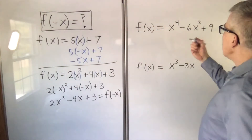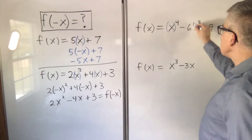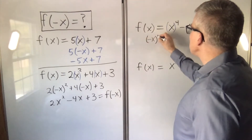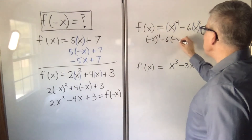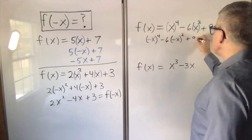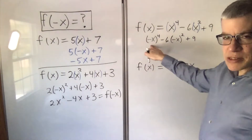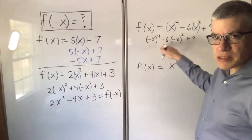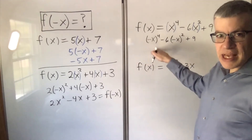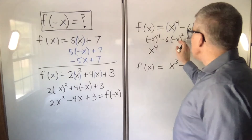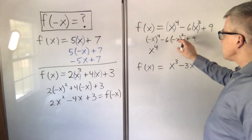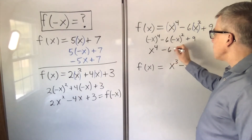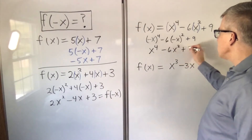Third example. Every x — put parentheses around it — then replace and get negative x to the fourth minus 6 times negative x squared plus 9. Now negative x to the fourth means negative x times itself four times. Every two negatives cancel, and you get x to the fourth. The negative x squared term has two negatives, and then there's another negative in front, so we end up with minus 6x squared plus 9.